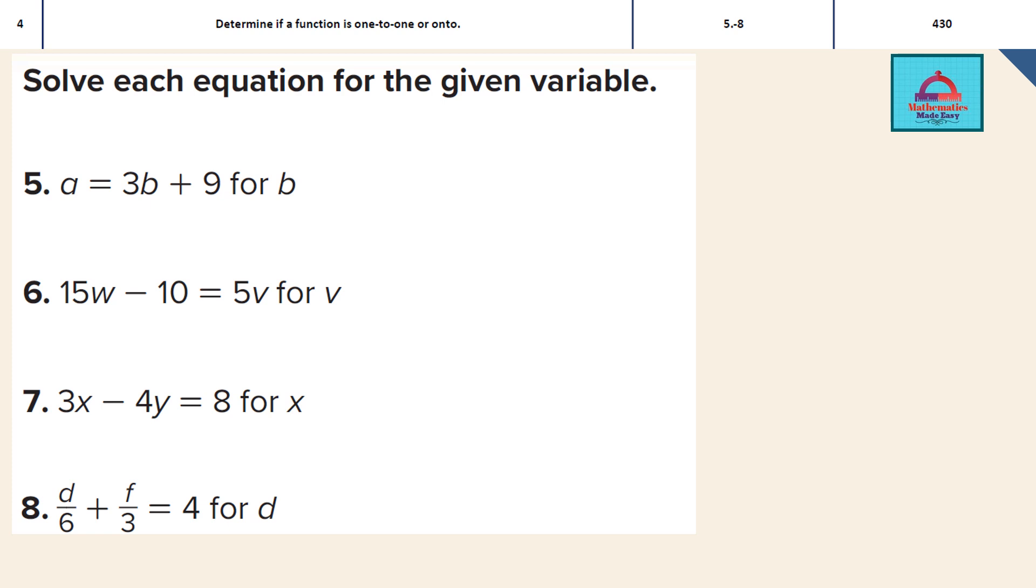So how do we solve these linear equations? If you look at questions 5, 6, 7, 8 carefully you will see they have multiple variables. For example, question 5 has two variables A and B involved. Now out of these two variables, the one for who we need to solve this equation is B. That means we need to find the value of variable B.